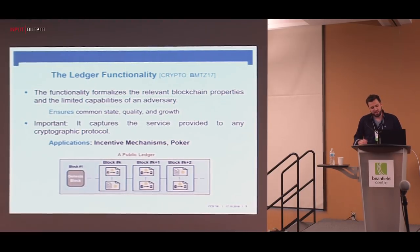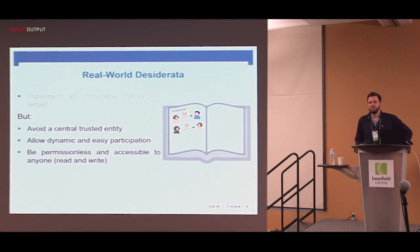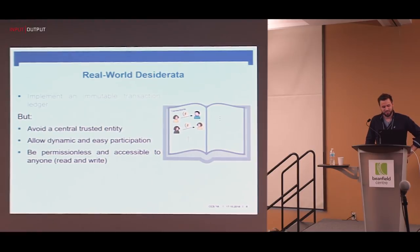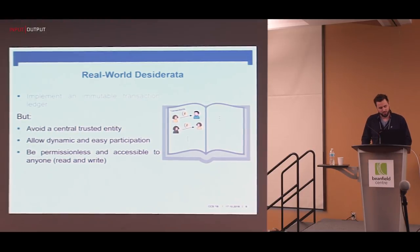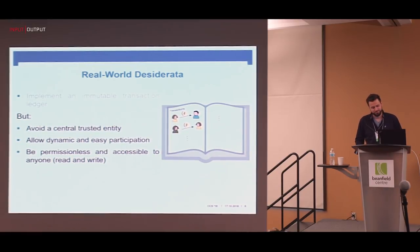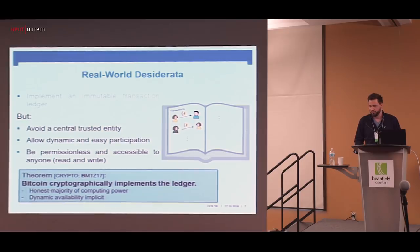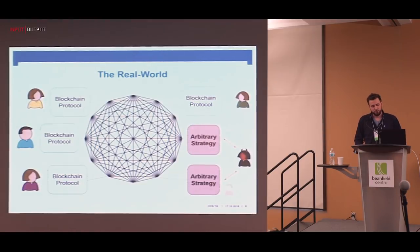We actually understand quite well what should be achieved. The problem that makes it really hard to implement are the real-world constraints imposed on blockchain protocols: one should at all times avoid a central trusted identity, one should allow for dynamic participation where people can come and go at will, and one should be permissionless and accessible to everyone. In a crypto paper last year we proved that Bitcoin achieves the ledger functionality fulfilling all of these properties under the honest majority assumption of computing power and in a dynamic availability setting.